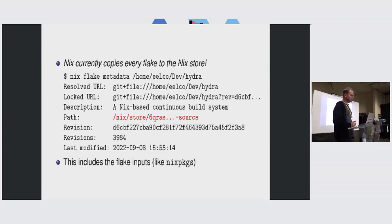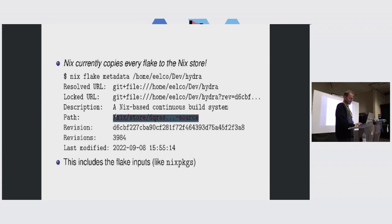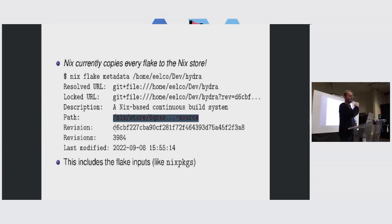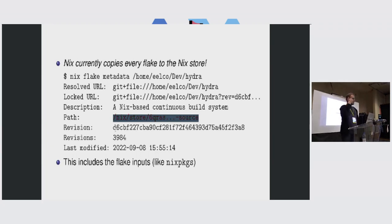Regardless of what you do with the flake, it ends up being copied to the Nix store. So if you do something like nix flake metadata on an arbitrary flake, that ends up in the Nix store. If that is a multi-gigabyte git repository, then every time you run Nix it will first copy all those gigabytes of data to the Nix store. If you make one character edit to your repository, you end up with a new multi-gigabyte copy in the Nix store.